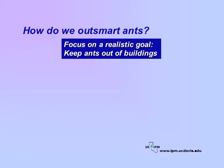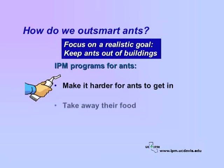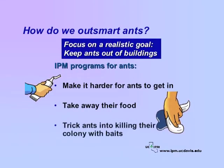So how do we outsmart ants? We need to focus on a realistic goal — that goal is to keep ants out of buildings. In an IPM program, we make it harder for ants to get in. We take away their food. And when all that fails, we trick them into killing their colony with baits.